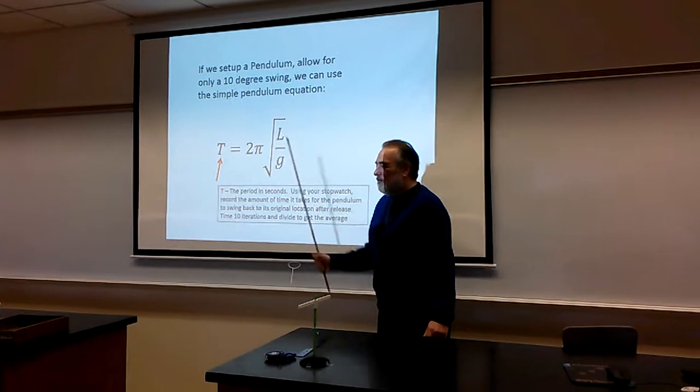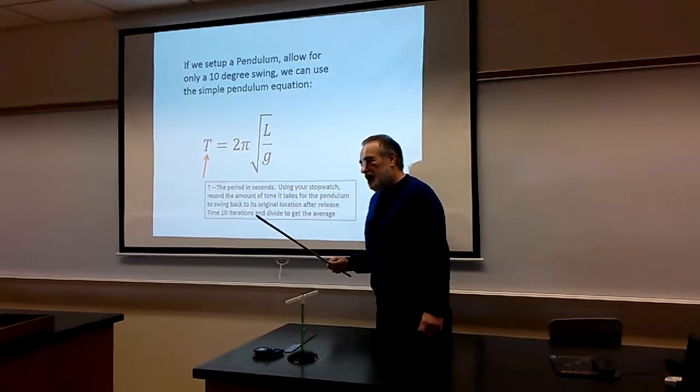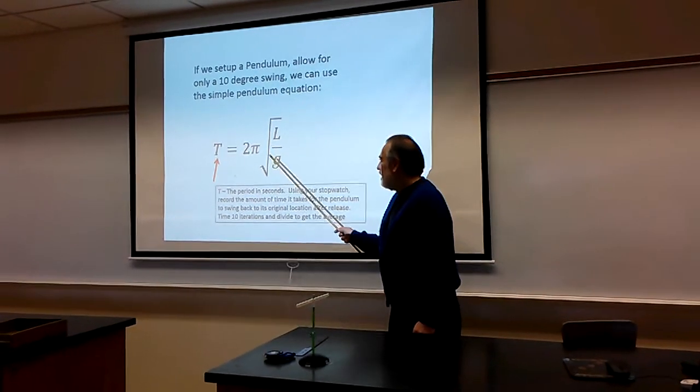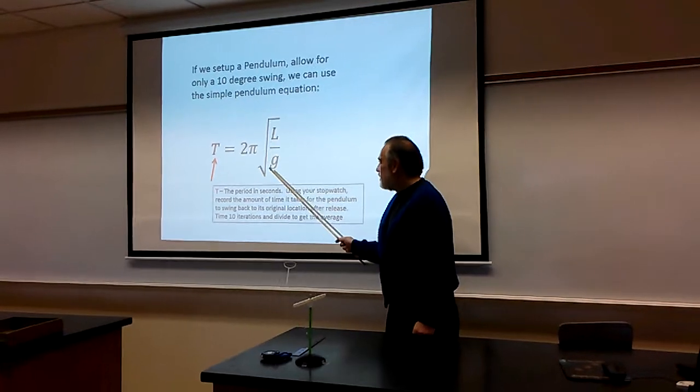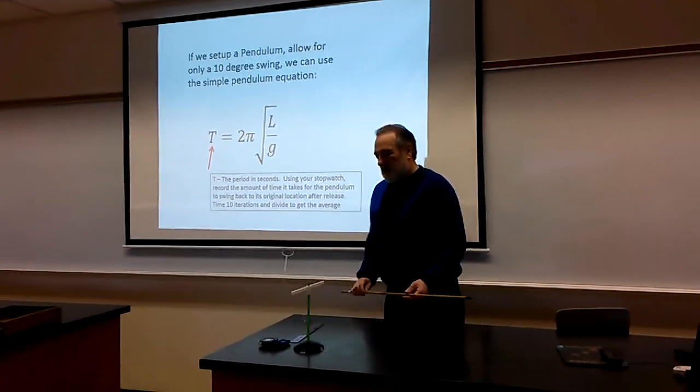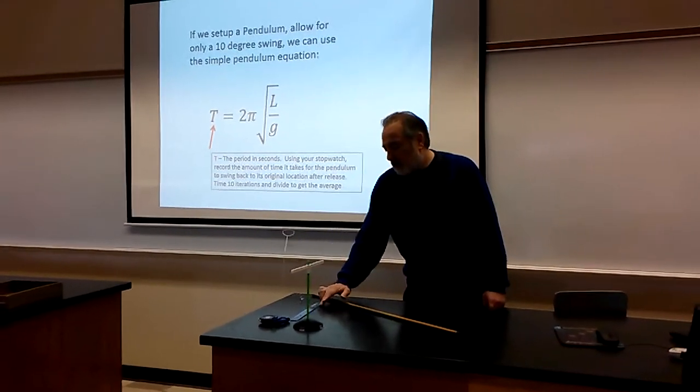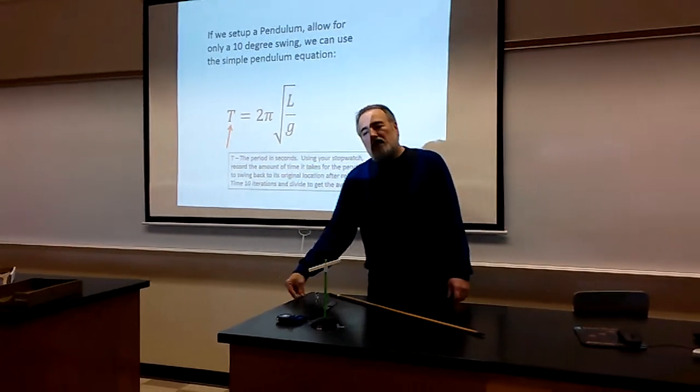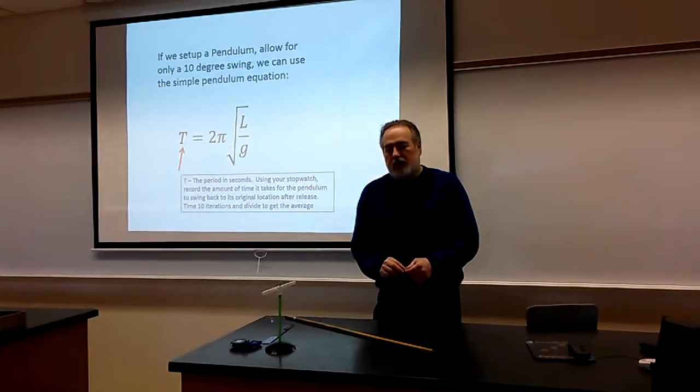Once you get to T, after measuring 10 tick-tocks together, you can solve this equation for G and get an acceleration due to gravity which should be close to 9.81 meters per second squared.